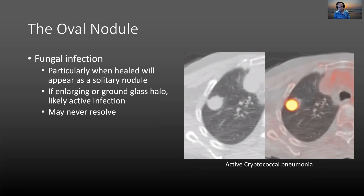Fungal infections — mostly the endemic fungal infections in immunocompetent or mildly immunocompromised patients — often appear as pulmonary nodules. Most of the time with an active fungal infection you'll have multiple nodules; however, you may occasionally have a single nodule, as in this case. More commonly, you'll see a solitary nodule representing a healed fungal pneumonia. If the nodule is enlarging or there's surrounding ground glass, those are good signs of active infection, but most of the time when we see this scenario we're looking at a healed fungal pneumonia.